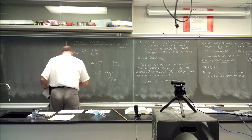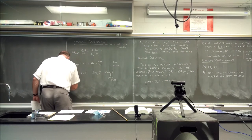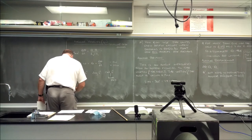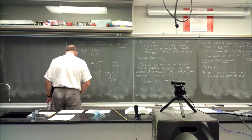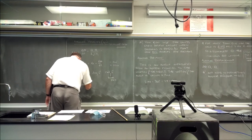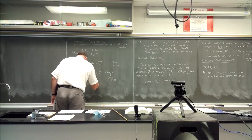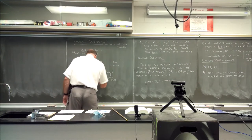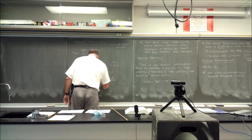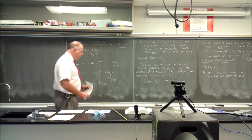Angular velocity is direction sensitive: clockwise is negative, counterclockwise is positive. Angular speed is the magnitude |ω| — the absolute value — and is always greater than zero, since there's no such thing as negative speed.